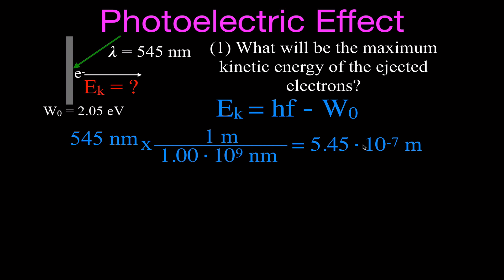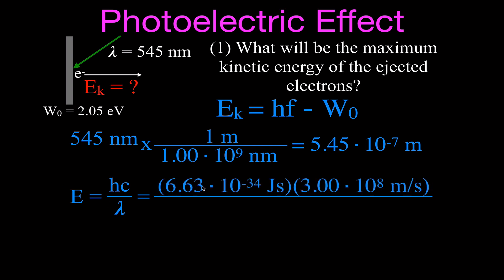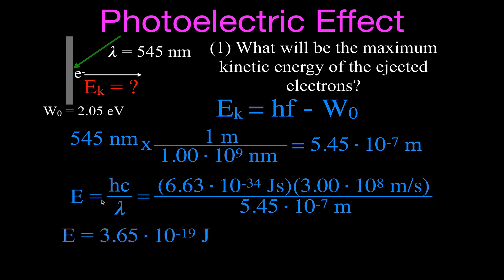We place that into our equation for energy: E equals Planck's constant times the speed of light divided by the wavelength (lambda). Planck's constant is 6.63×10⁻³⁴ joule-seconds, the speed of light is 3.0×10⁸ meters per second, and the wavelength is 5.45×10⁻⁷ meters. The meters and seconds cancel, leaving joules, and we get an energy of 3.65×10⁻¹⁹ joules.